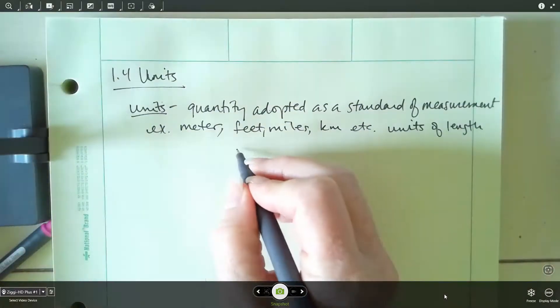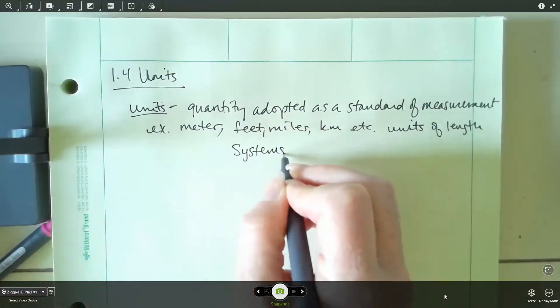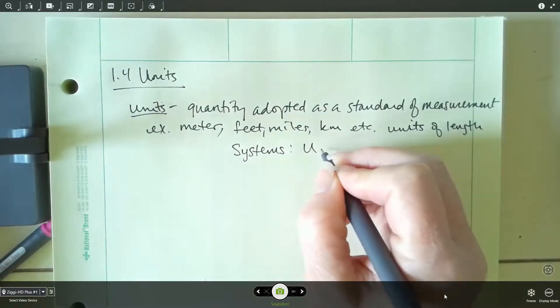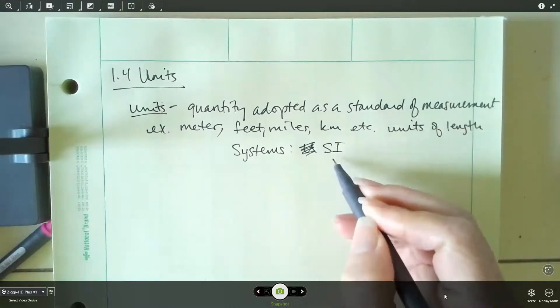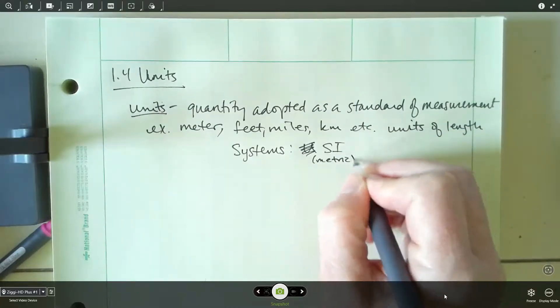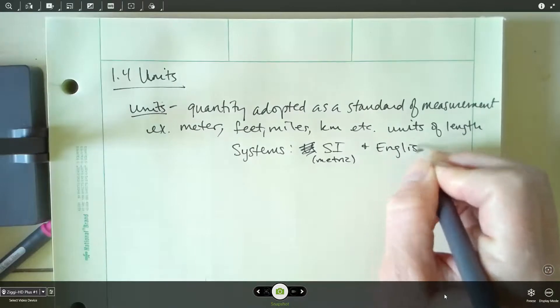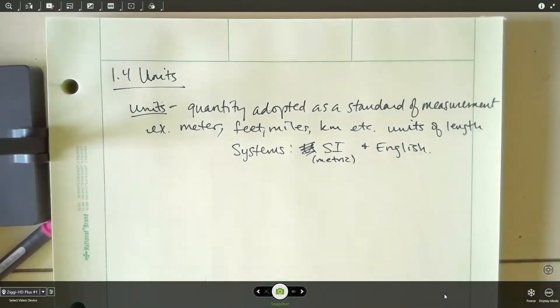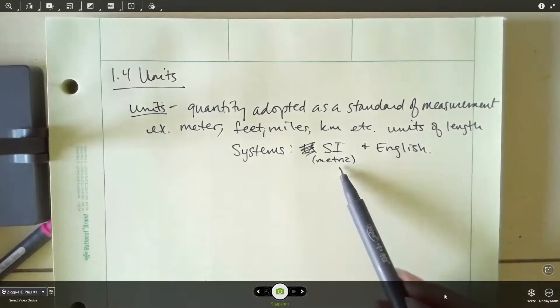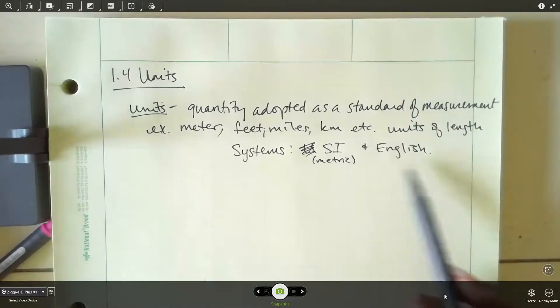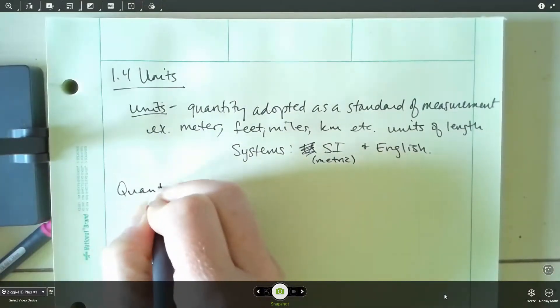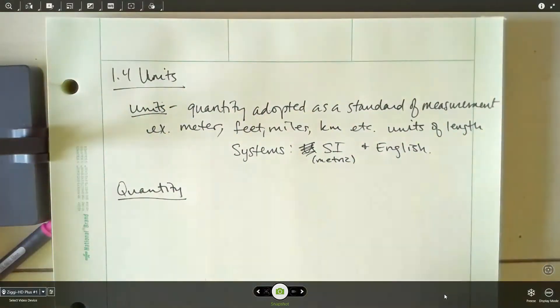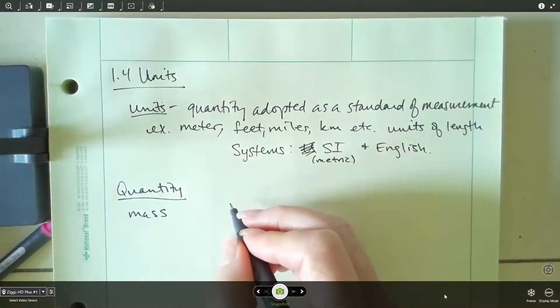Now, let's go over our two systems we're going to use. We're going to talk about the SI system. This is also the metric system. And then we've got everybody's favorite, which is the English or the imperial system. Now, the metric system tends to be a lot easier to deal with than the English system, and you'll quickly discover this when we start working out problems.